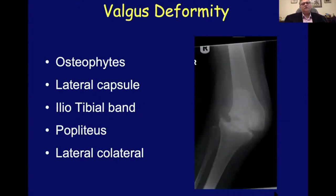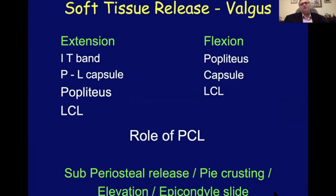Valgus deformity involves the osteophytes, the lateral capsule, the iliotibial band and the role it plays in flexion and extension, the popliteus tendon, and eventually the lateral collateral ligament. When it comes to soft tissue release for valgus, you need to appreciate whether the deformity is in extension or flexion, because the structures to be released depend on that. The role of the PCL again needs to be understood and how releasing it will correct your deformity — it should not be a given. How you release structures — whether subperiosteal release, pie-crusting, elevation, or an epicondylar slide — depends on individual experience and what is required in that particular case.